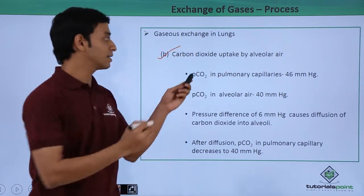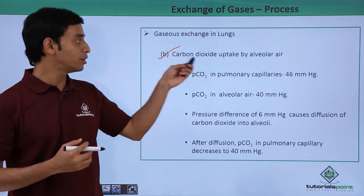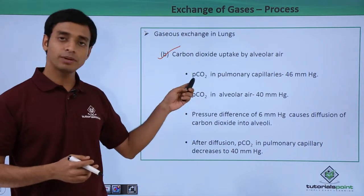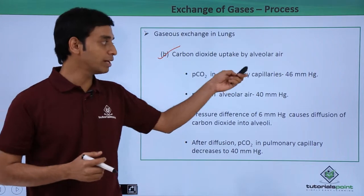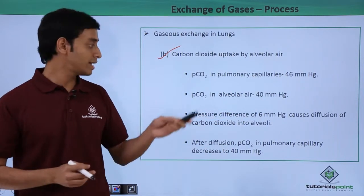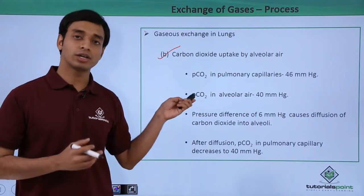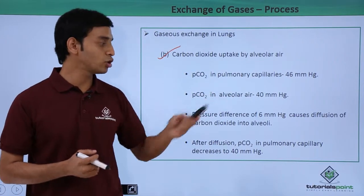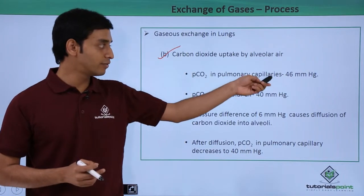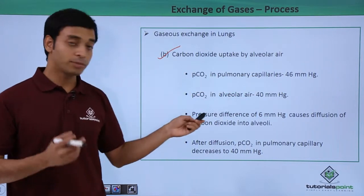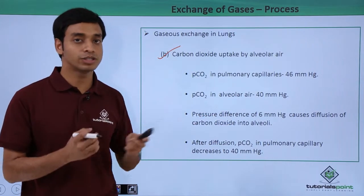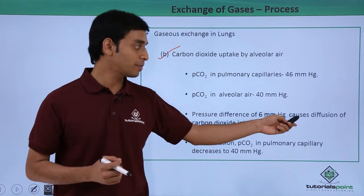During the process of carbon dioxide uptake by the alveolar air, the partial pressure of carbon dioxide in the pulmonary capillaries is about 46 mmHg, whereas in the alveolar air the partial pressure of carbon dioxide is about 40 mmHg. So there is a difference of about 6 mmHg.